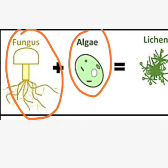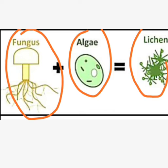Here, alga are autotrophs whereas fungus is a saprotroph. This symbiotic relationship between an alga and fungus is known as lichen — not 'liken', it is lichen.